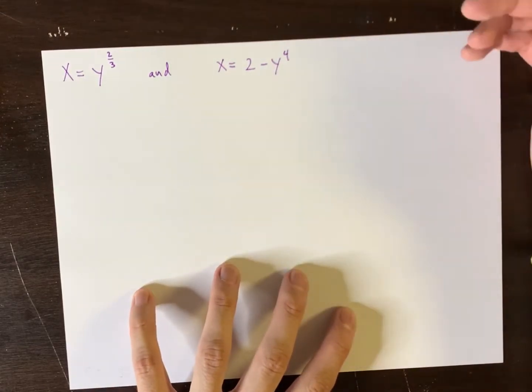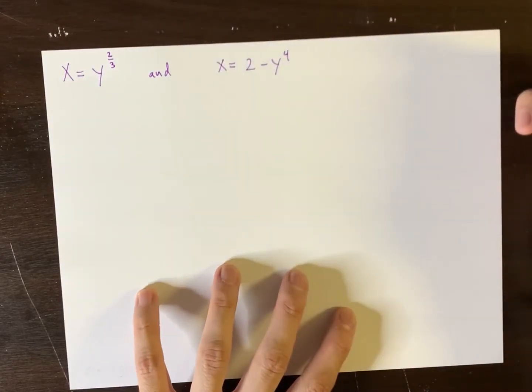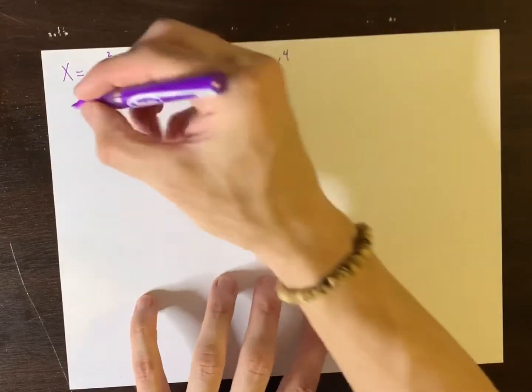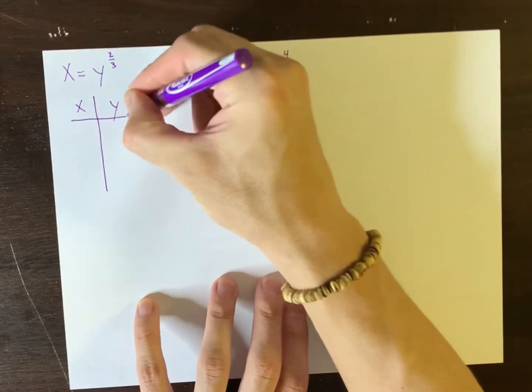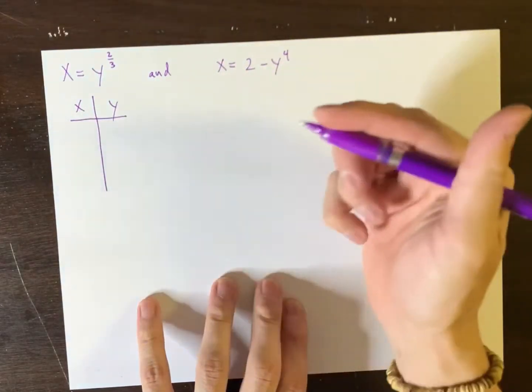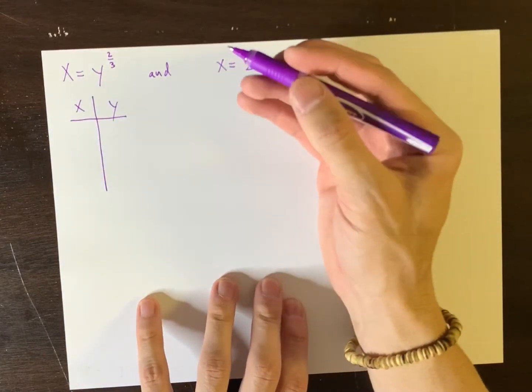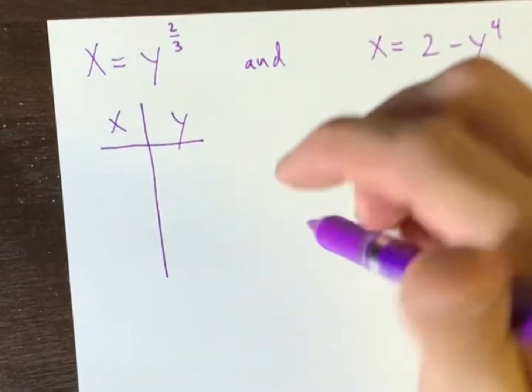If you're allowed to use a graphing calculator, go ahead and graph them. Assuming that you're not, you'd have to make a table of values. And for instance, for something like this one here, I would actually fill out the y's instead of the x's. And for the y's, I'd use numbers that I know that I can cube root, for instance.